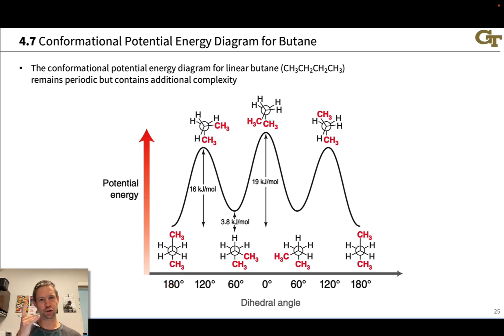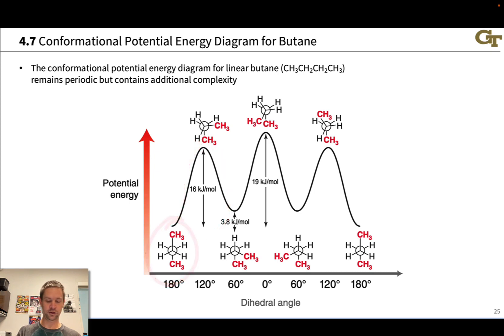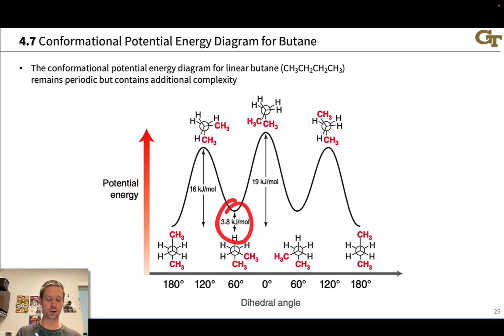Butane, primarily because of the two methyl groups on either carbon, has different staggered and eclipsed conformations and more complexity in its conformational energy diagram. For example, there are two energy barriers: 16 kilojoules per mole to go from one structure to another, and 19 kilojoules per mole to go between another pair. There are two different barriers, and there is an energy difference of about 3.8 kilojoules per mole between these minima. So why does this happen, and how do we think about it? That's what we're going to look at in the ensuing slides.